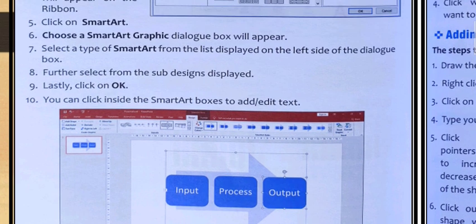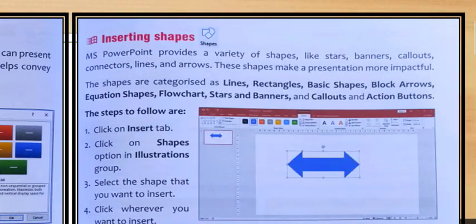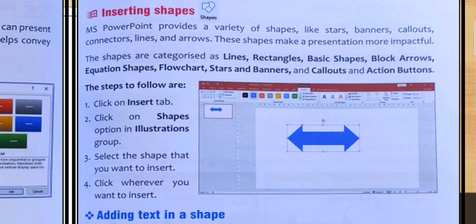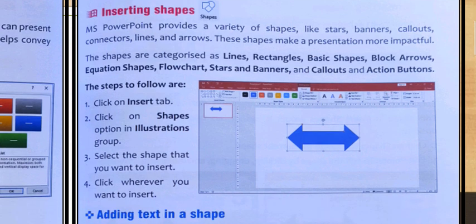These are the basic steps to be followed for inserting SmartArt. Next is inserting shapes. Shapes means a variety of shapes like stars, banners, callouts, connector lines, and arrows. The shapes make presentation more impactful and attractive. The shapes are categorized as lines, rectangles, basic shapes, block arrows, equation shapes, flow charts, stars, and banners.